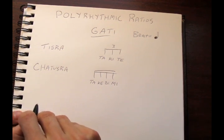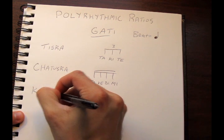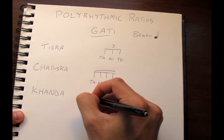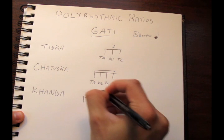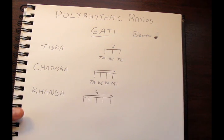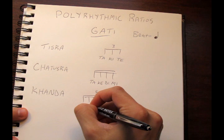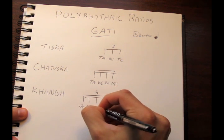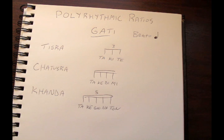The five-tuplet is known as kanda. We are going to draw five sixteenth notes with five on top, meaning you can fit five sixteenth notes in the space of four sixteenth notes. The syllables we will be using are ta-ke-gi-na-tum. Ta-ke-gi-na-tum, ta-ke-gi-na-tum.